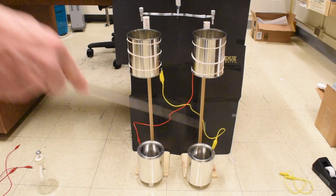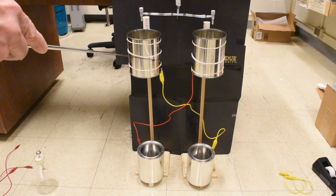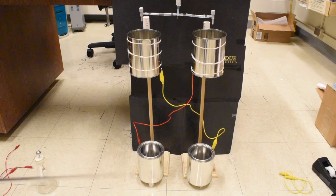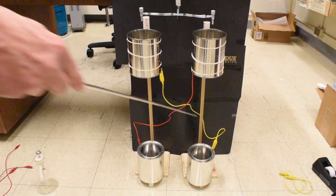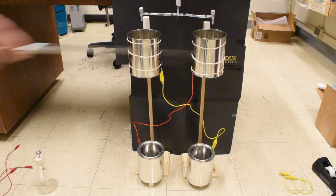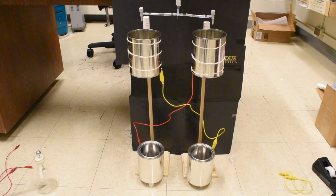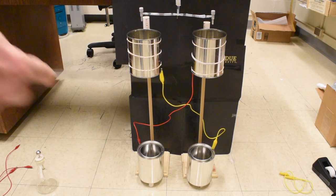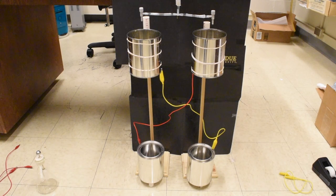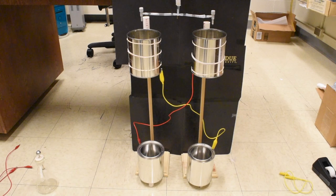So I have four unlined one quart paint cans. I have the bottoms cut out of the top two, and the upper left is connected to the lower right, and the upper right is connected to the lower left. So one conductor of our capacitor will be the upper left, lower right can, and the other conductor will be the upper right, lower left paint cans.